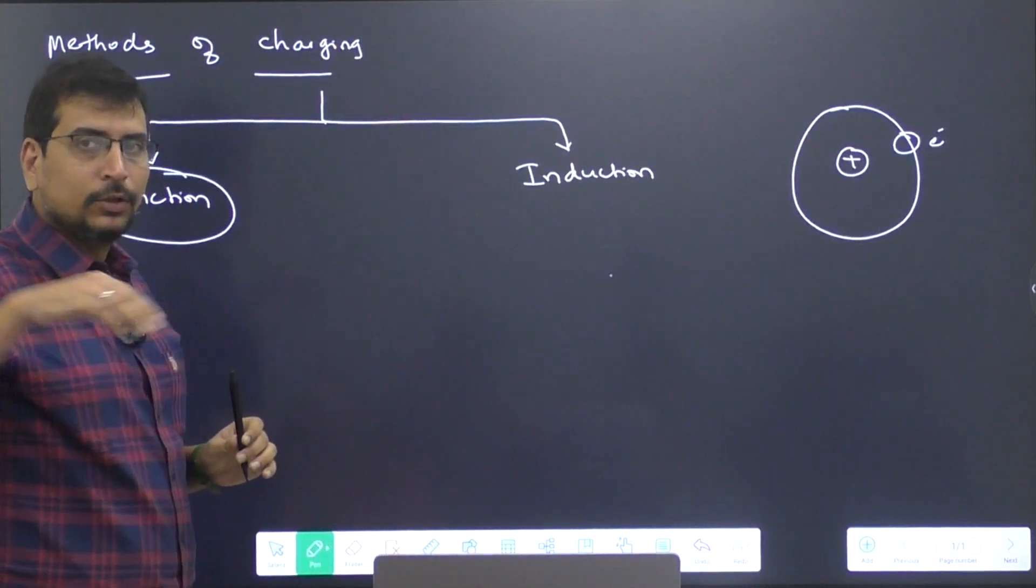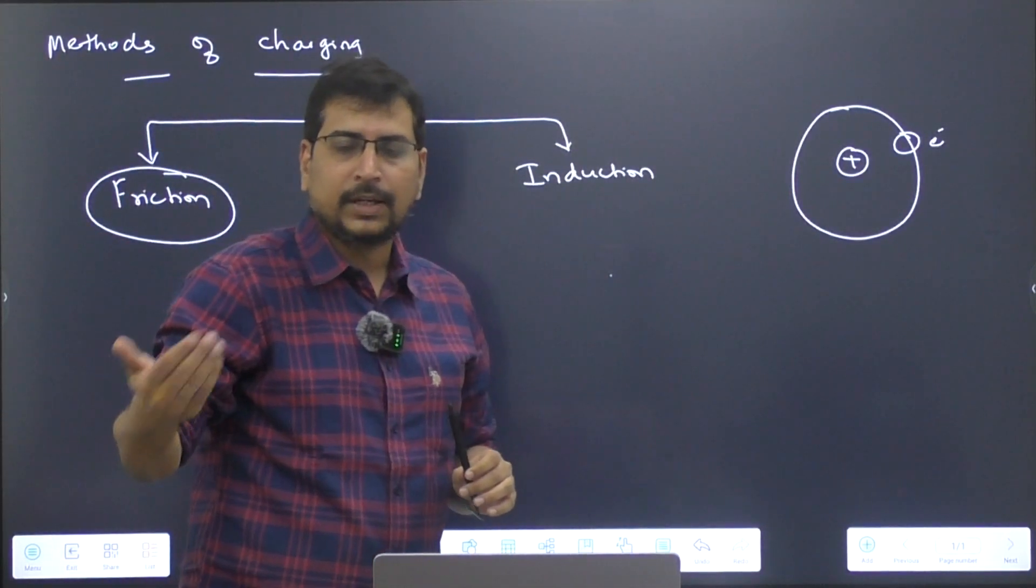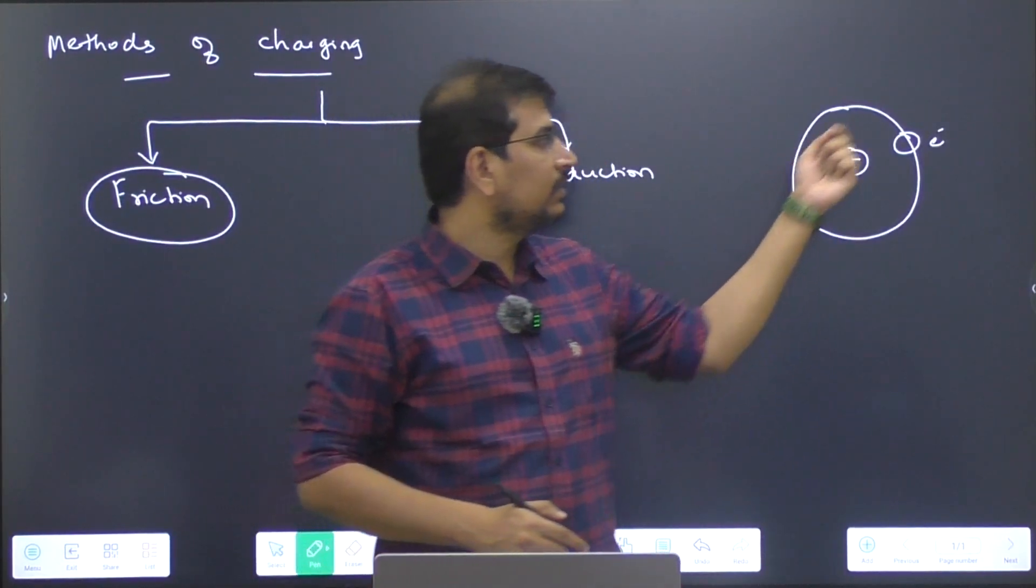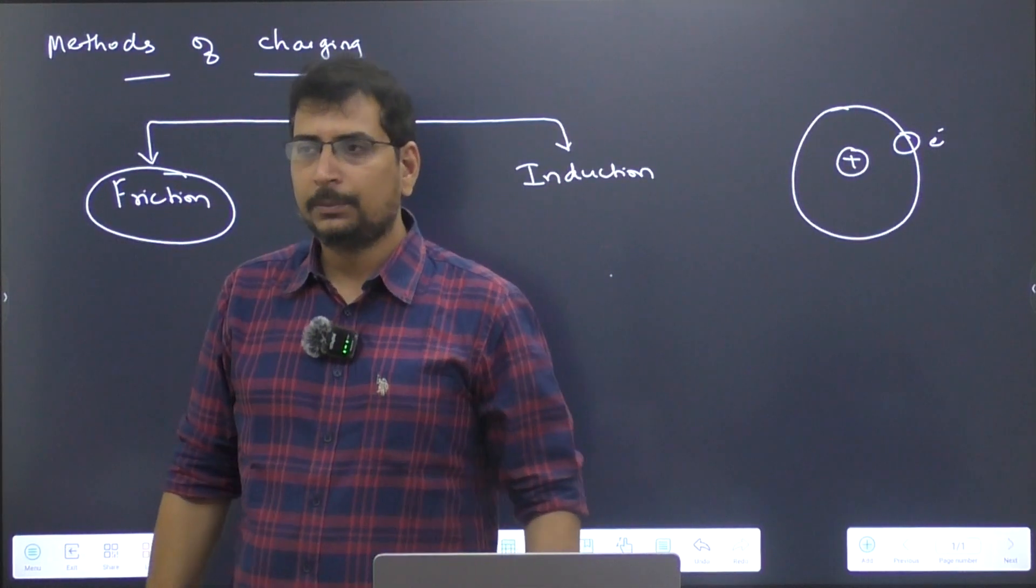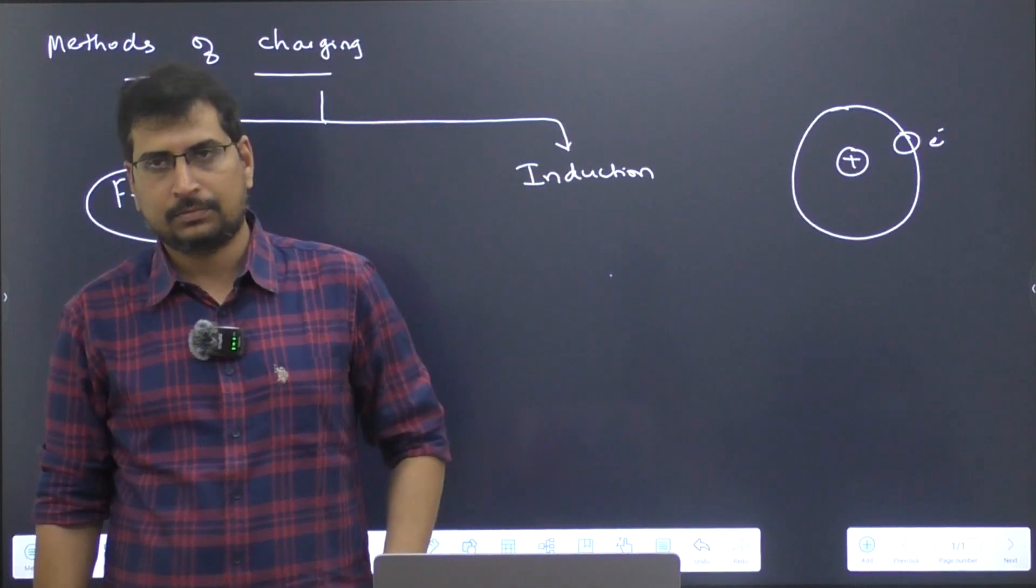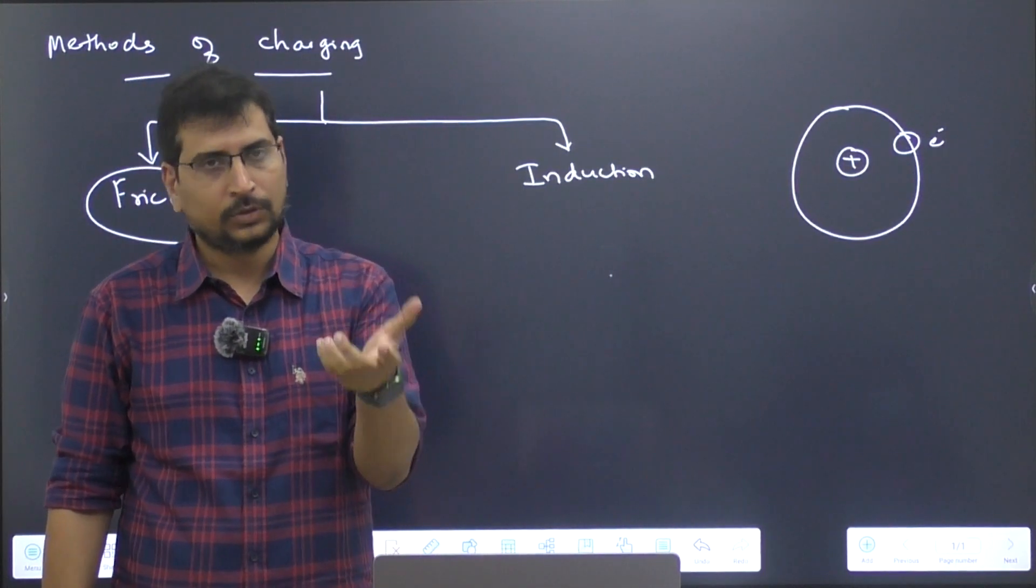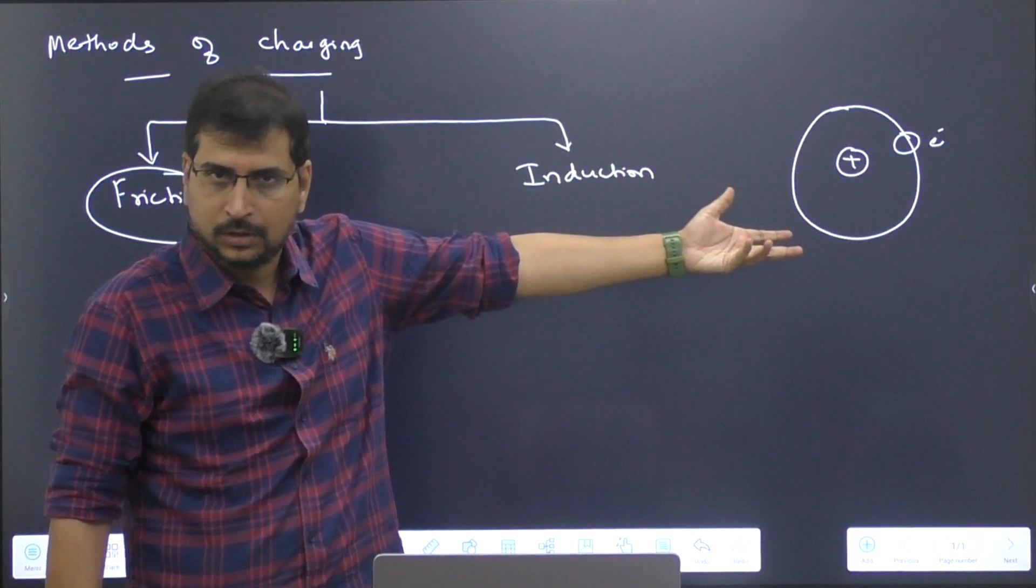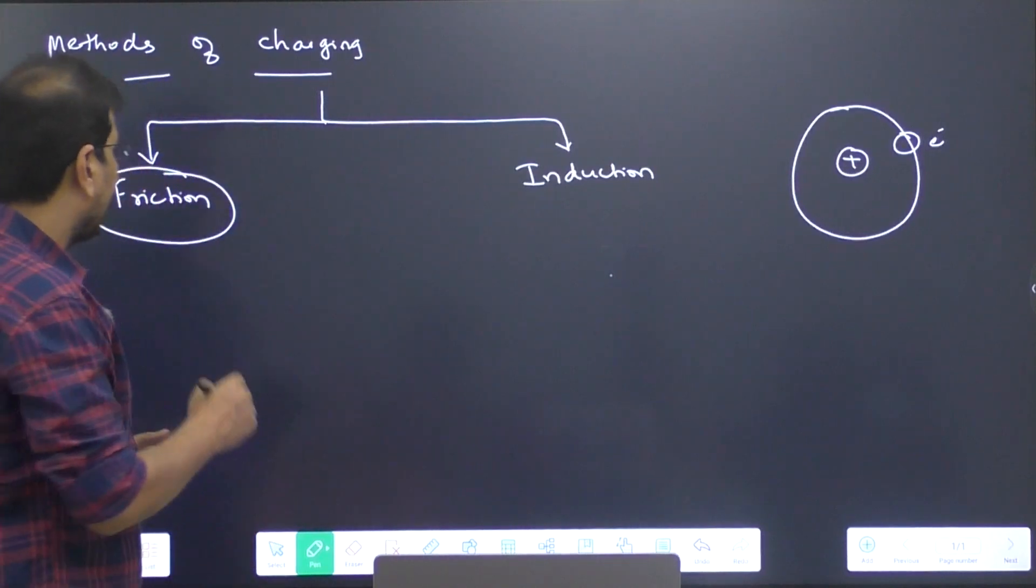In a similar way, instead of using light, if I am able to use heat energy, then you can make this electron escape. That kind of emission is called thermionic emission. When a material loses or gains electrons, then it becomes an ion.